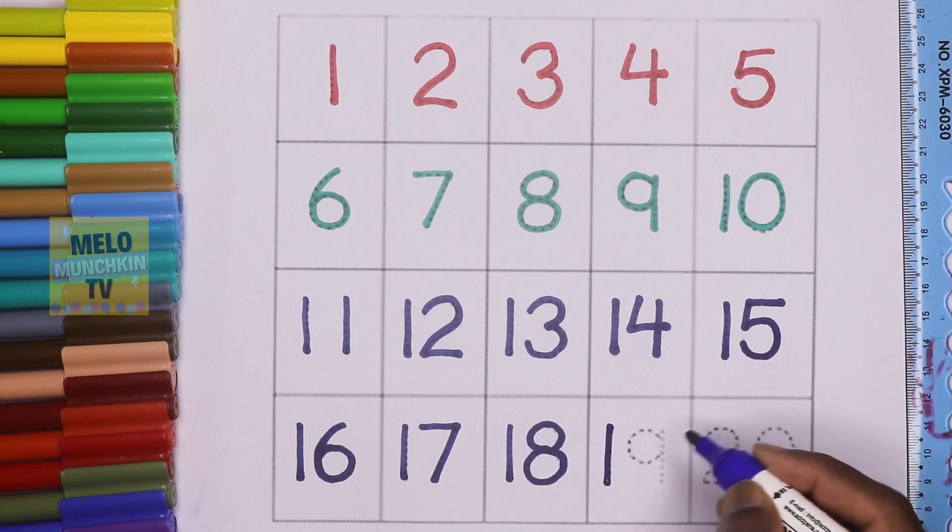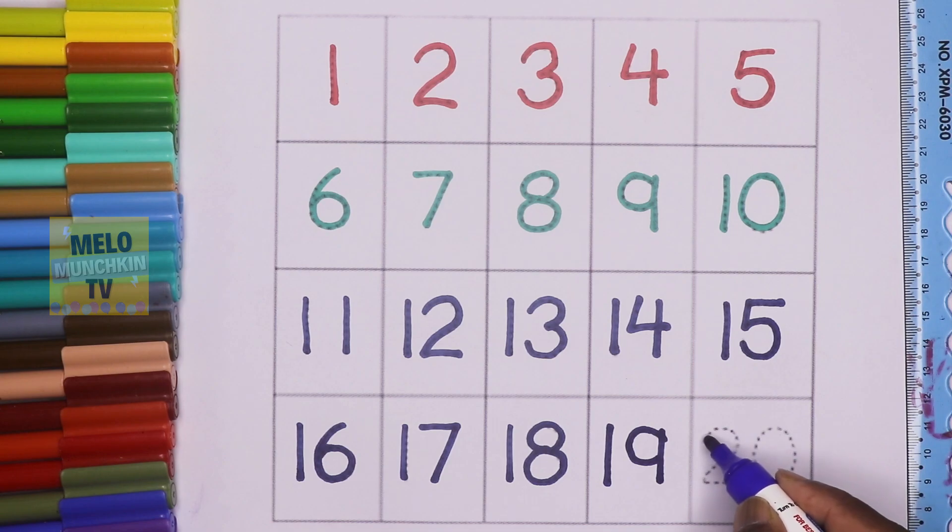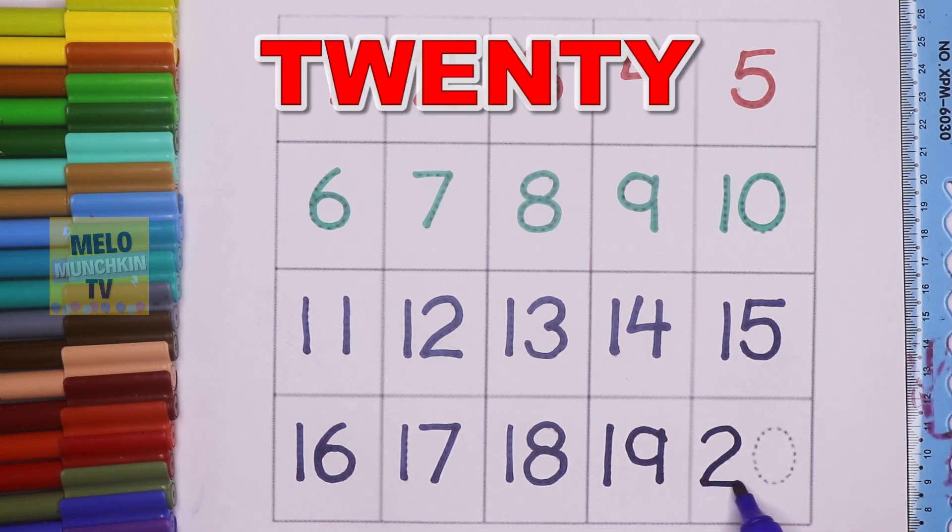This is number nineteen. N-I-N-E-T-E-E-N. Nineteen. This is number twenty. T-W-E-N-T-Y. Twenty.